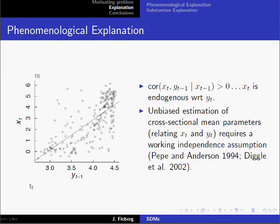One of the things we noticed early on was that today's movement was correlated with yesterday's heart rate, even if we conditioned on yesterday's movement rate. When this occurs, the covariate process is said to be endogenous with respect to the response, and there are implications for model fitting and estimation when this occurs. For example, unbiased estimation of cross-sectional mean parameters that relate x sub t and y sub t requires a working independence assumption.